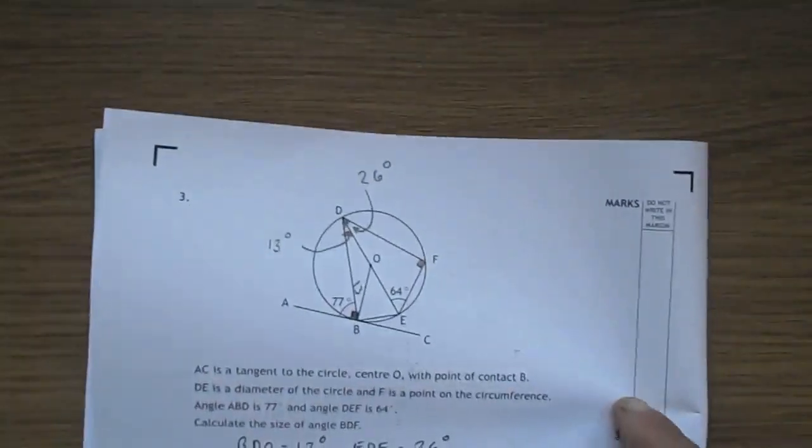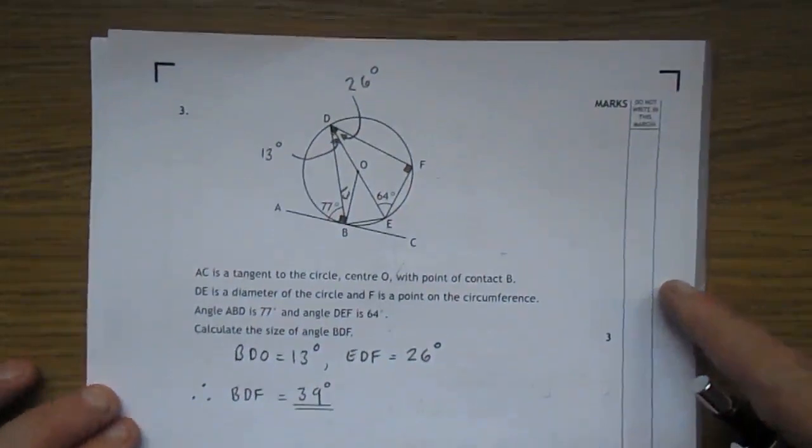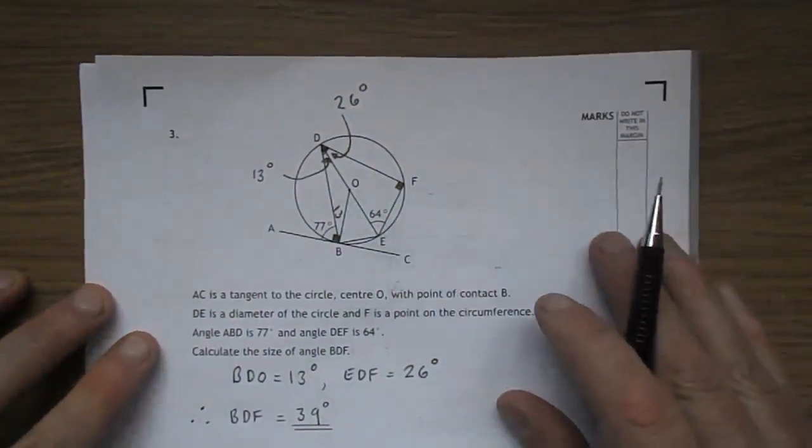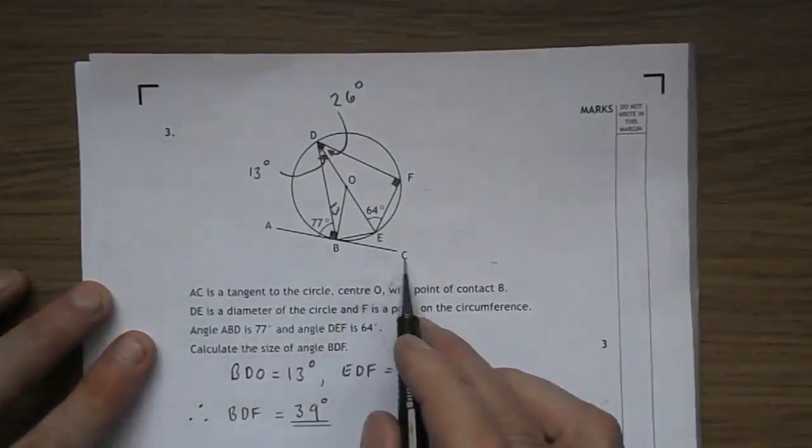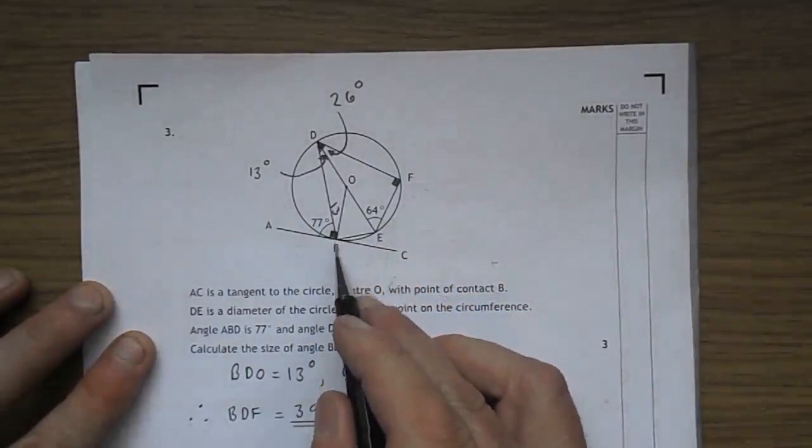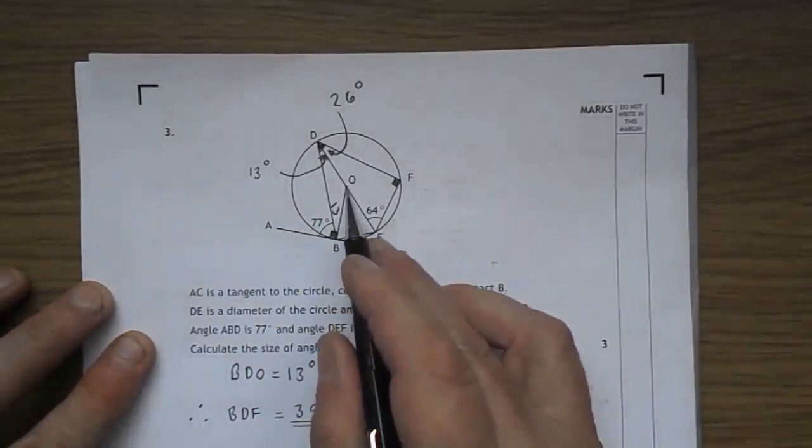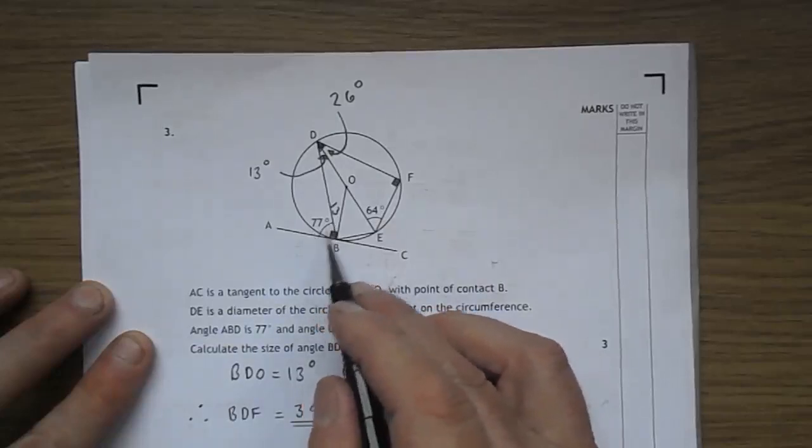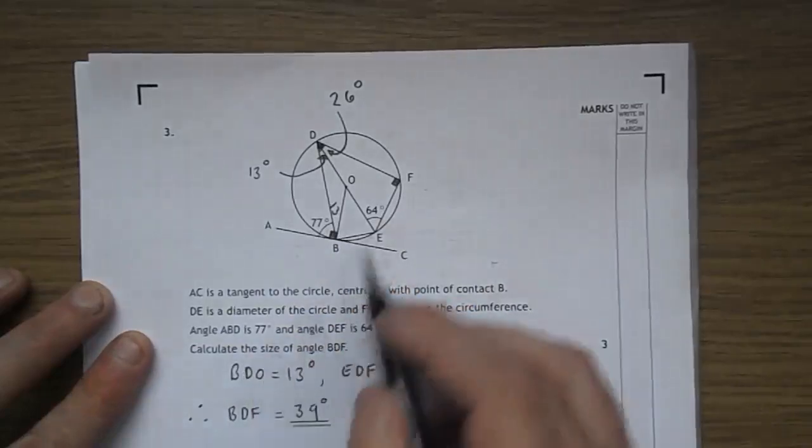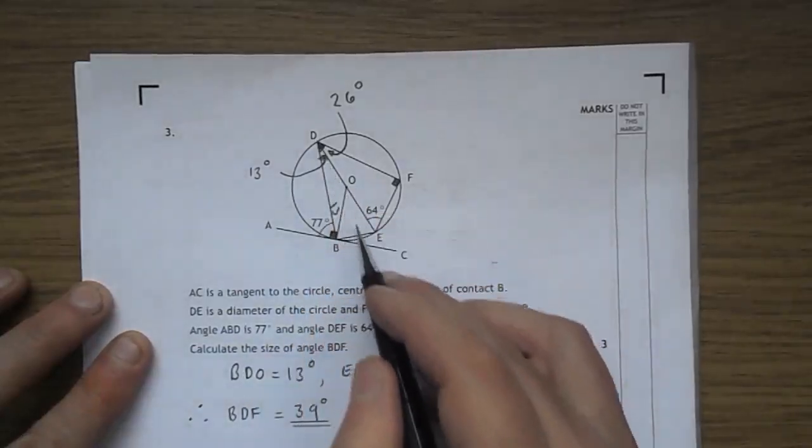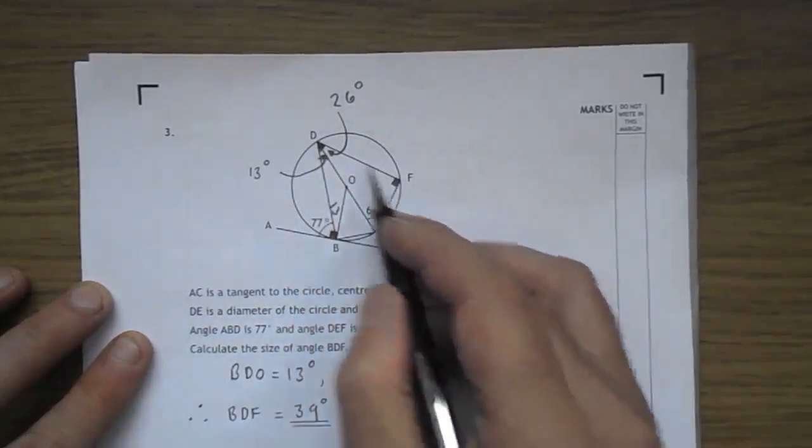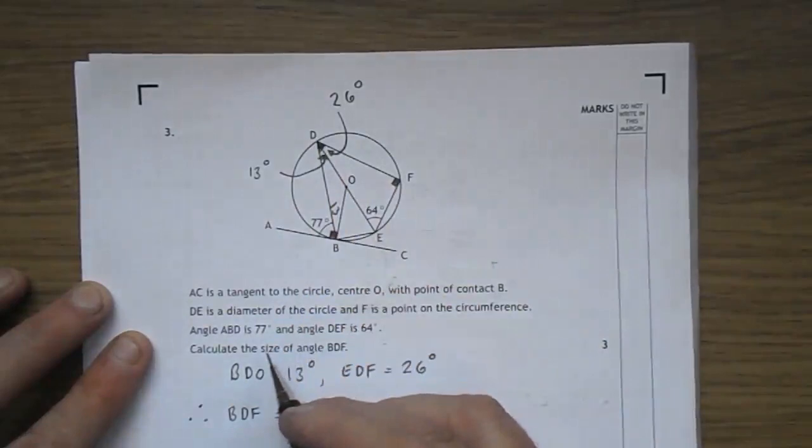On to number three. Here we have quite a small circle, to be honest. And you have AC as a tangent. And that means that OTB is 90 degrees. Centre circle tangent, 90 degrees. Therefore, if that's 77, that's 13. And over on the other side of this diameter, we have a right angle. You have a diameter there to there. That means that that's a right angle in this case.